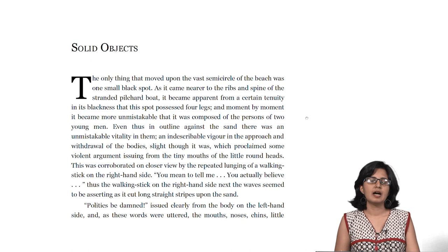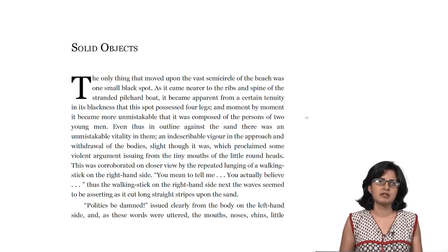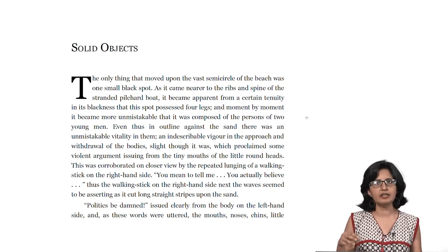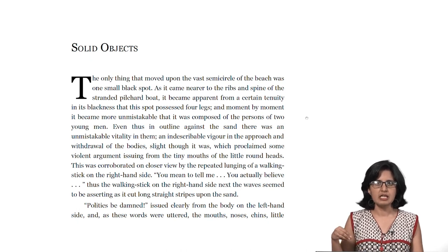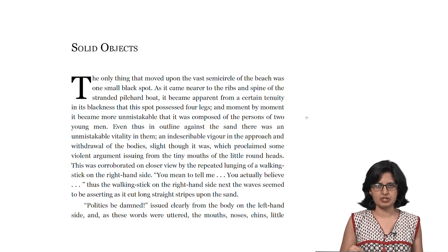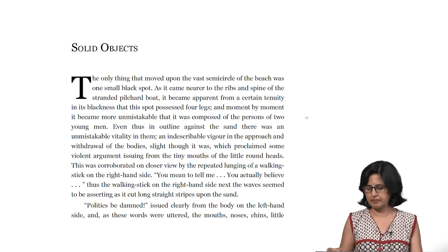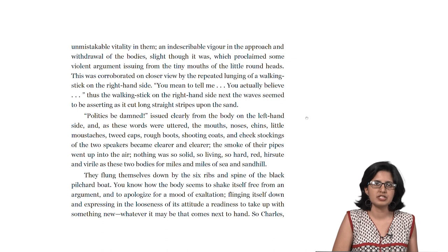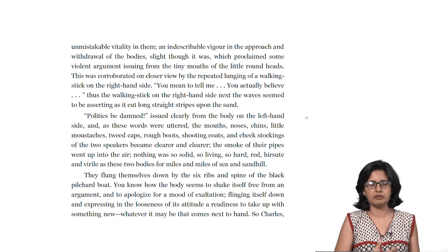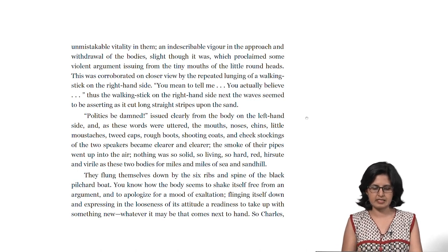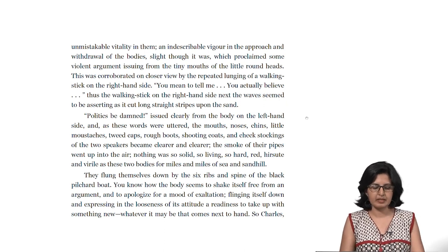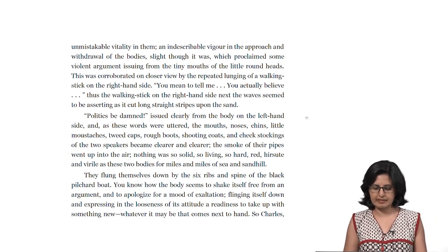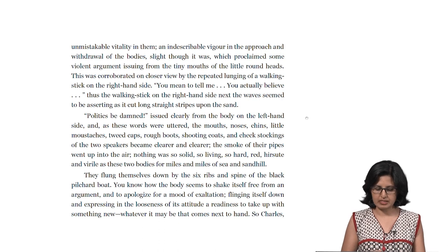'Even thus an outline against the sand, there was an unmistakable vitality in them, an indescribable vigour in the approach and withdrawal of the bodies, slight though it was, which proclaimed some violent argument issuing from the tiny mouths of their little round heads.' And we find two upper-class males in conversation, largely about politics. The story zooms in visually into the two individuals. Then: 'Politics be damned,' issued clearly from the body on the left-hand side, and as these words were uttered, the mouths, noses, chins, little moustaches, tweed caps, rough boots, shooting coats, and check stockings of the two speakers became clearer. The smoke of their pipes went up into the air — nothing was so solid, so living, so hard, red, sweet and virile as these two bodies for miles and miles of sea and sand.